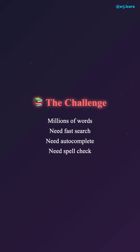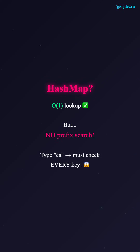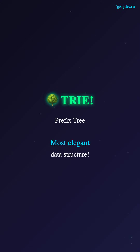Imagine you have a dictionary with millions of words. You need to search strings efficiently, get autocomplete suggestions, and have a spell checker. You might think: why not use a hash map? After all, it gives us O(1) lookup time. But here's the problem — a hash map cannot do prefix search. If I type 'CA', how do you find all words starting with CA? You would need to check every single key in the hash map. That's inefficient.